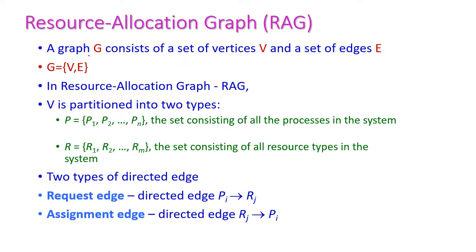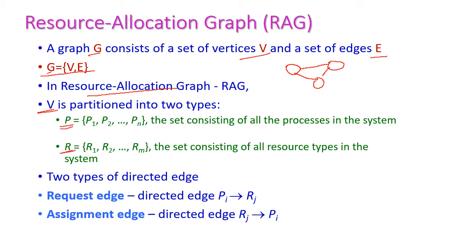We know a graph consists of a set of vertices and a set of edges — that is G equal to V comma E. These are vertices, and these vertices will be connected by using the edges. When it comes to resource allocation graph, here also we have vertices and edges, but two types of vertices are there: the first one is process vertices and the second one is resource vertices.